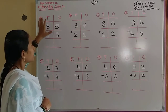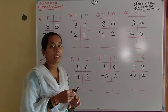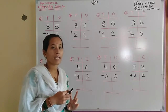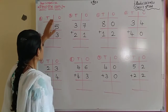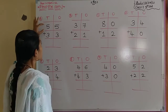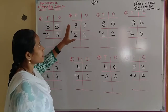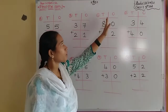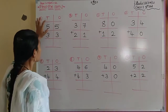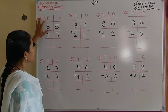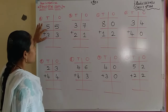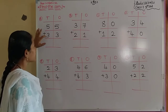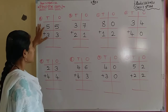Here the two-digit numbers contain the place value positions: ones and tens. They have given the digits under the ones and tens placement separately. The first problem: 55 is the first addend and 33 is the second addend.